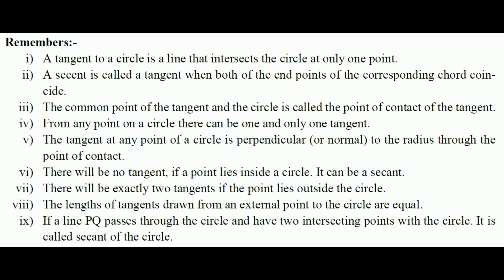The last point: if a line PQ passes through the circle and has two intersecting points with the circle, it is called a secant of the circle. These are the basic points that one must know before solving problems on tangents to a circle. Let us practice examples now.